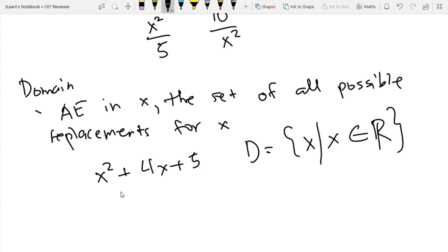Pero for example we have 3x over x minus 4. Eto hindi pwedeng maging zero yung denominator natin. So yung domain natin dito ay x such that x is an element of all real numbers pero x should not be equal to 4.